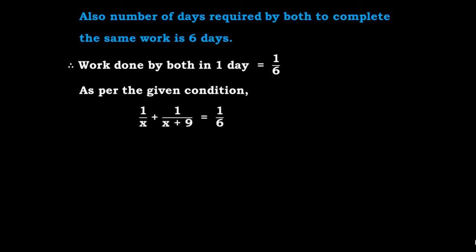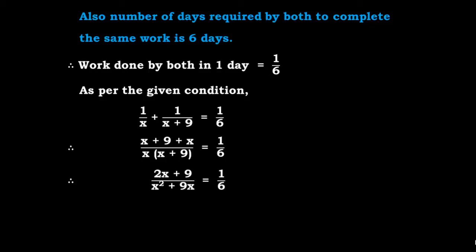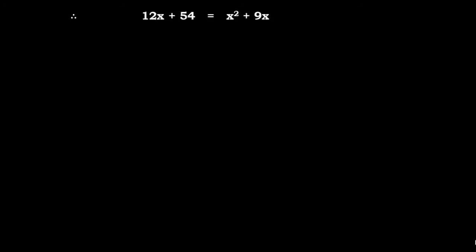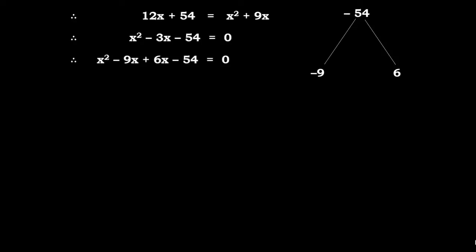As per the given condition, the equation is 1/X + 1/(X + 9) = 1/6. Cross multiplying: (X + 9 + X) / (X(X + 9)) = 1/6, giving (2X + 9) / (X² + 9X) = 1/6. By cross multiplication: 6(2X + 9) = X² + 9X, so 12X + 54 = X² + 9X. In standard form: X² − 3X − 54 = 0. Factorizing −54: factors are −9 and +6.